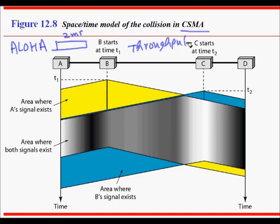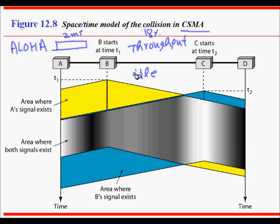The problem with Aloha is that throughput is really low — around 18% — because you never check if the channel is busy. In reality it is easy to check: if the channel is idle there is no energy; if someone is transmitting there will be more power; and if there is a collision there will be even more power. So you can sense the channel based on energy.